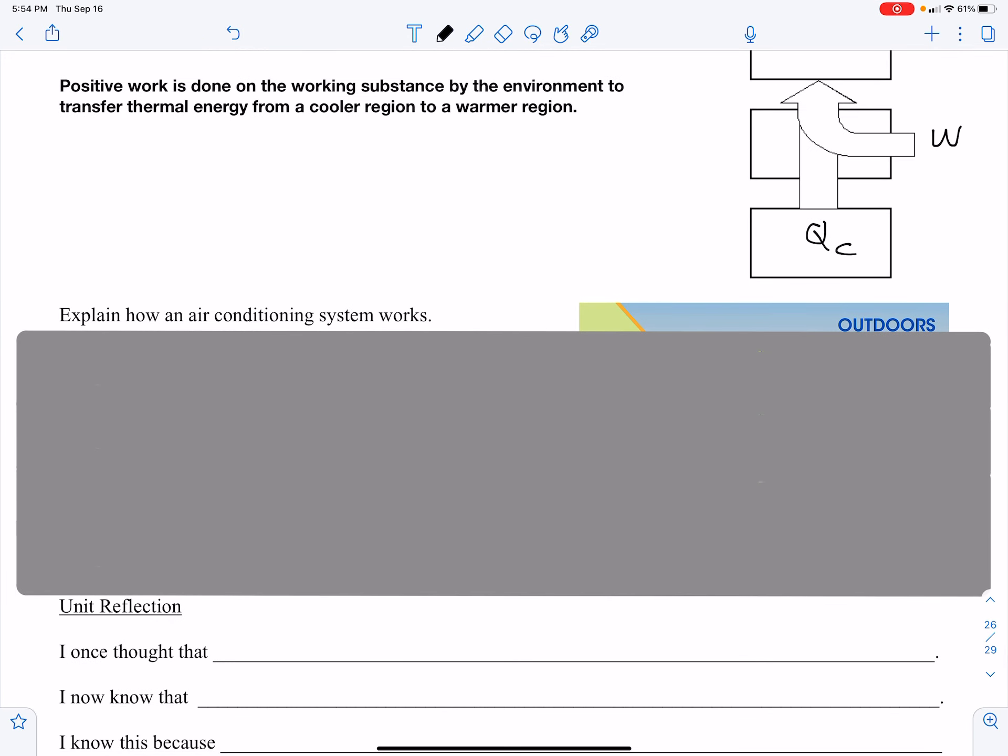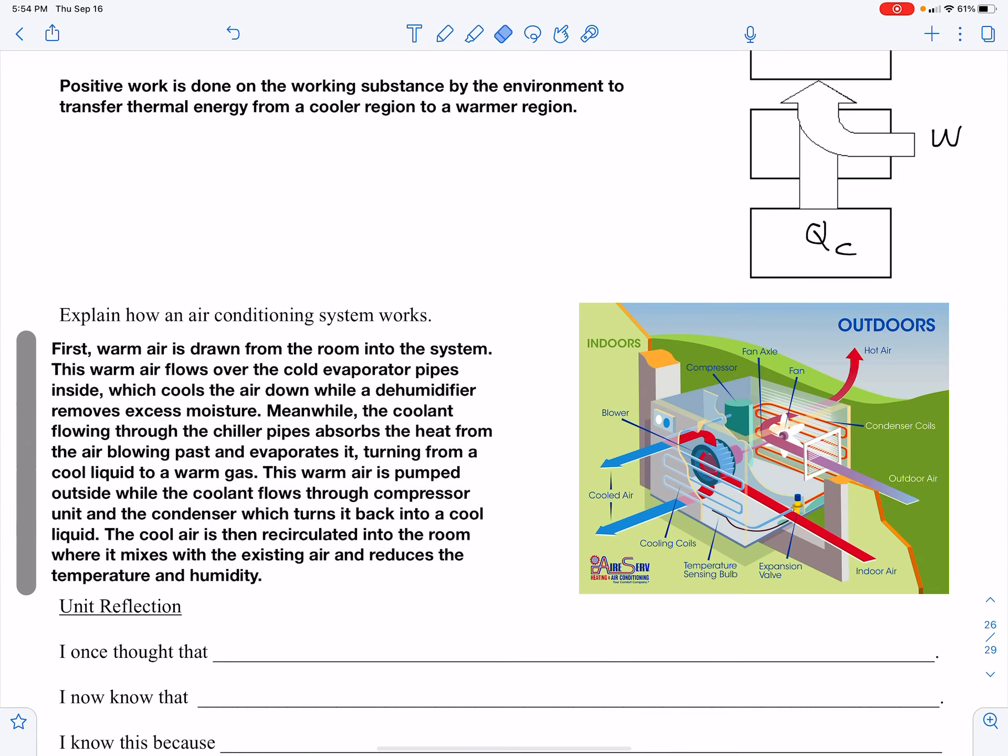A refrigerator would be one example of a heat pump or a thermodynamic pump. An air conditioning unit would be another. So how does an air conditioning system work? Well, first, warm air from the room is drawn into the system.